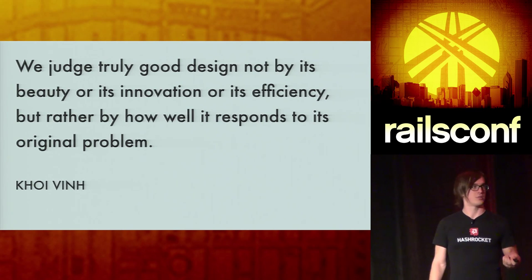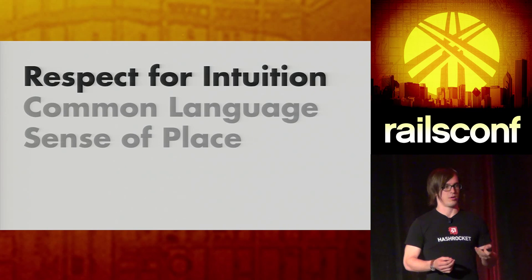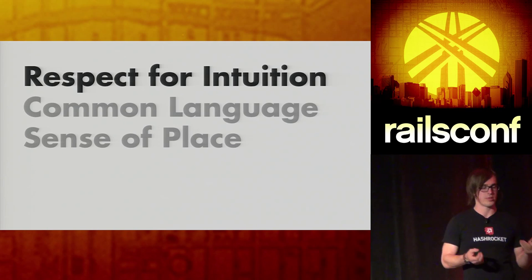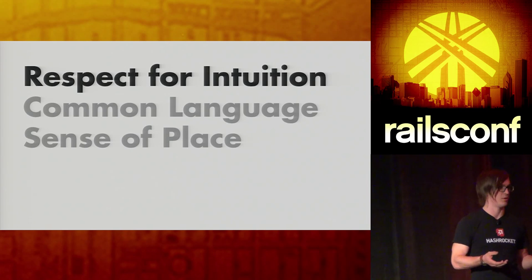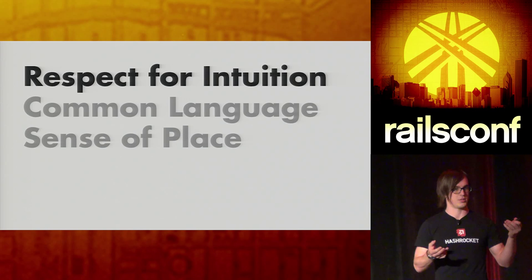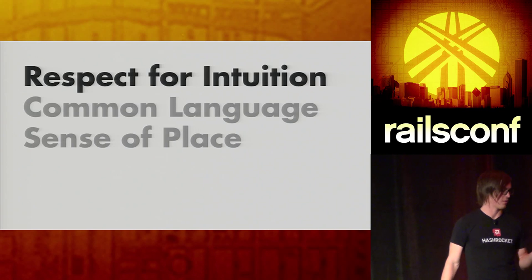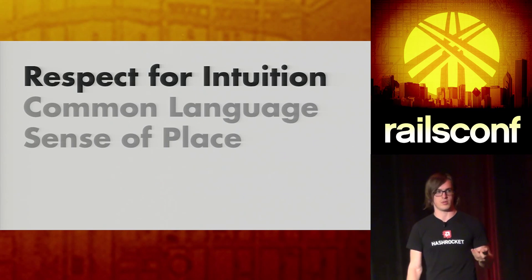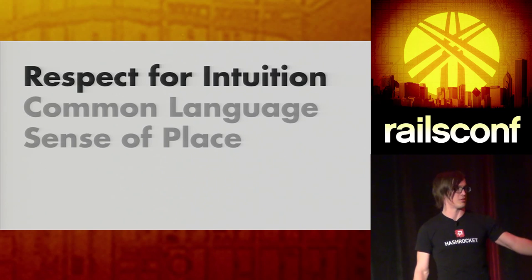We're going to look at three separate types of ways to quantify this stuff. It's one thing to notice it and laugh about it or figure out a better way to do it. Another thing is to do so on the basis of a principle. These are some basic principles I think you could use when you notice this stuff: respect for intuition, having a common language, and having a sense of place.